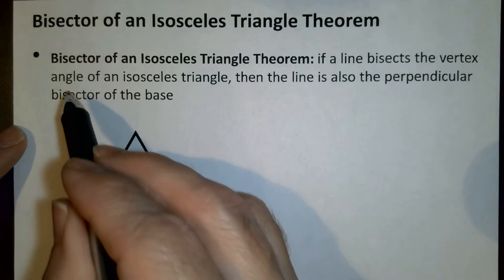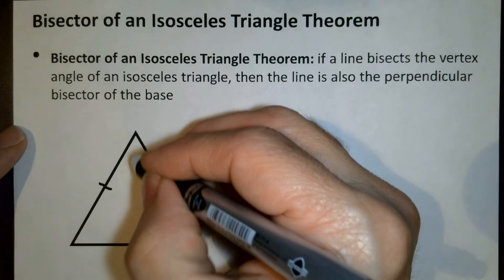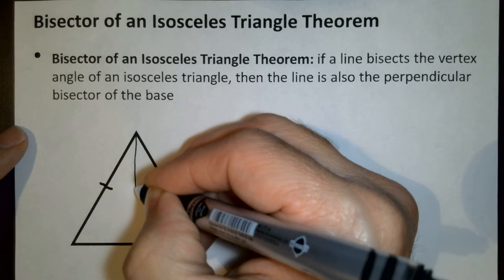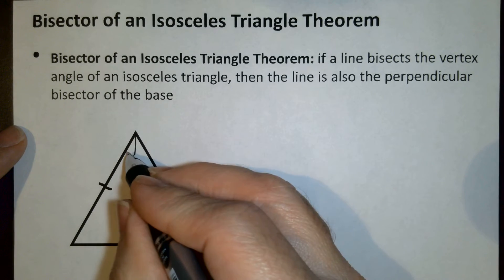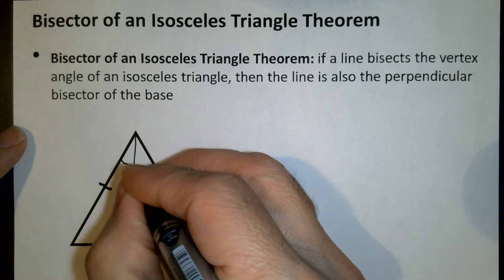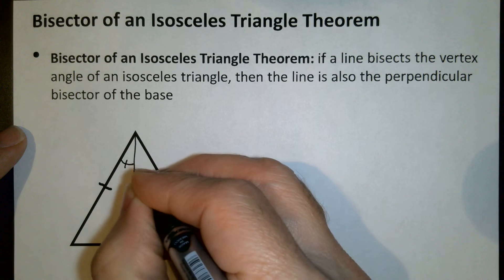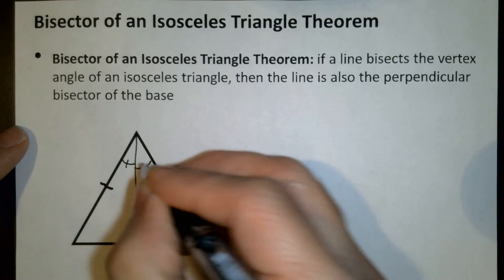If a line bisects that vertex angle, so we have a line that comes through here and it takes this vertex angle up here and bisects it, meaning it separates it into two congruent angles.